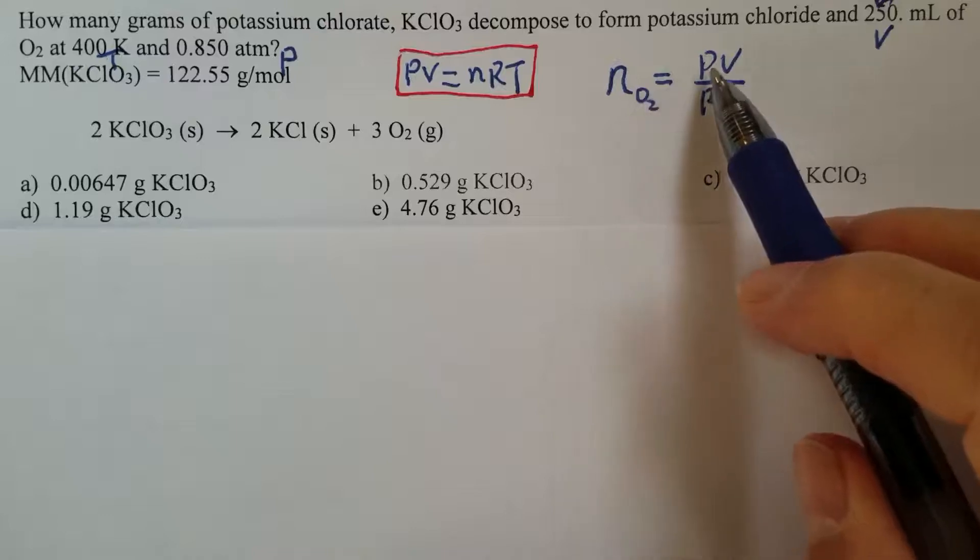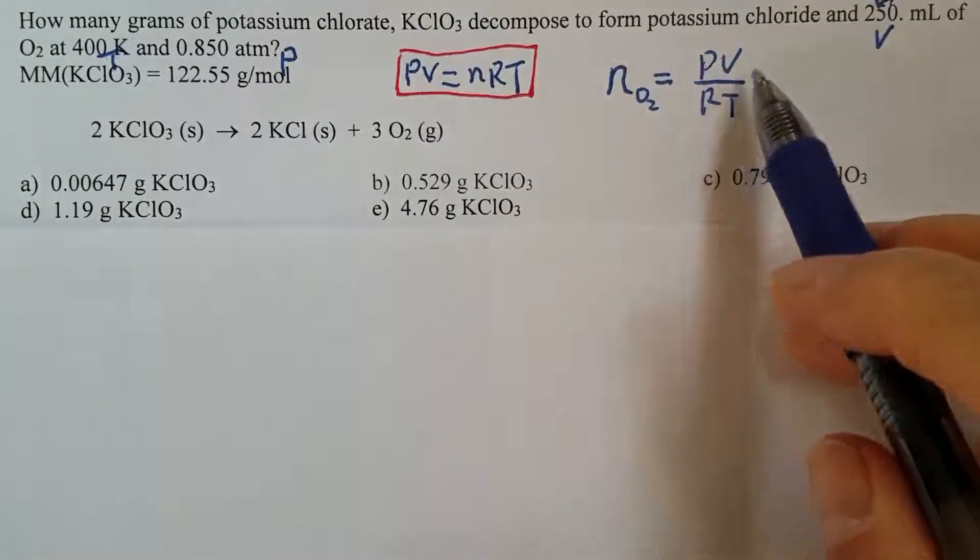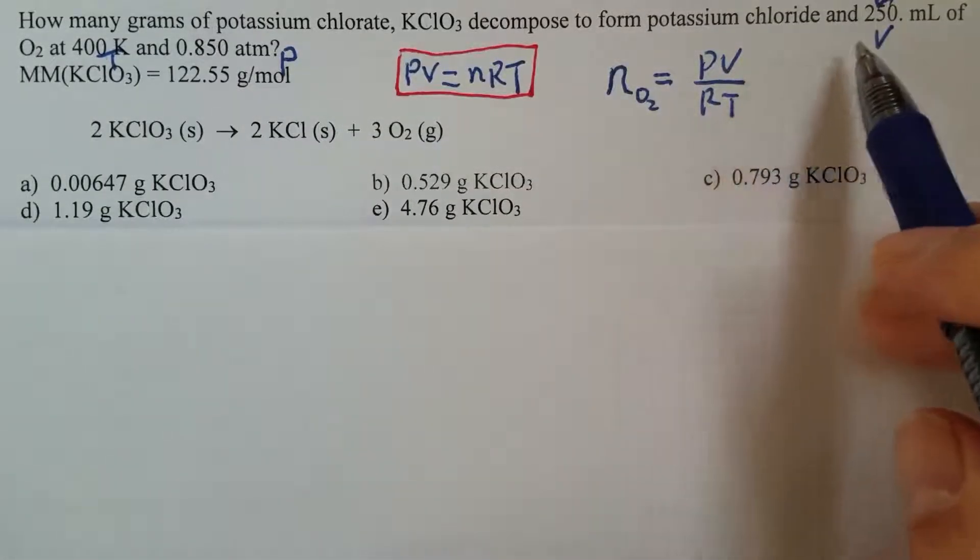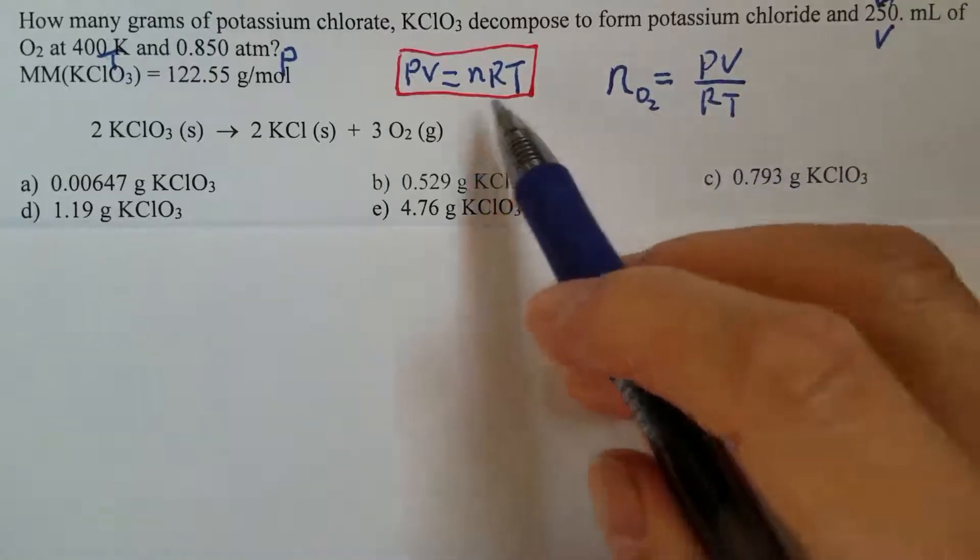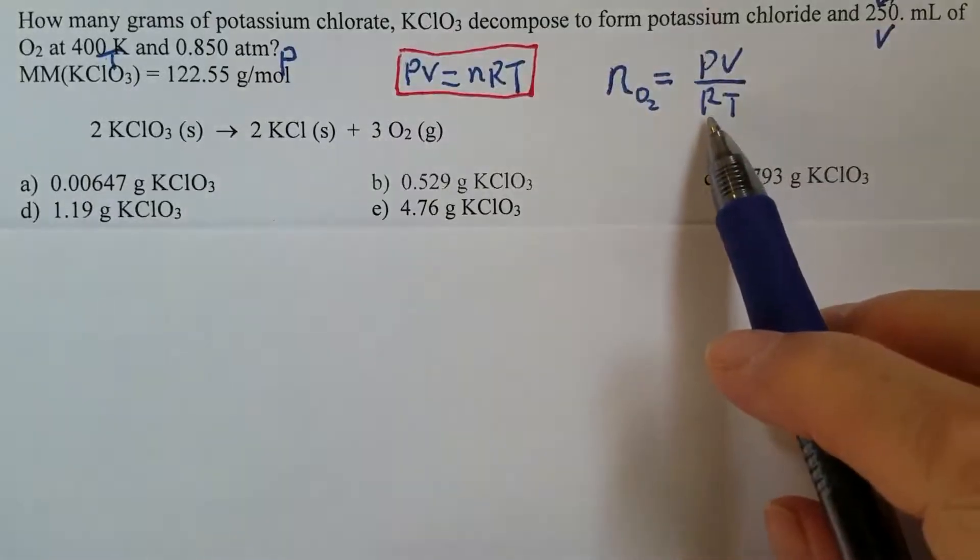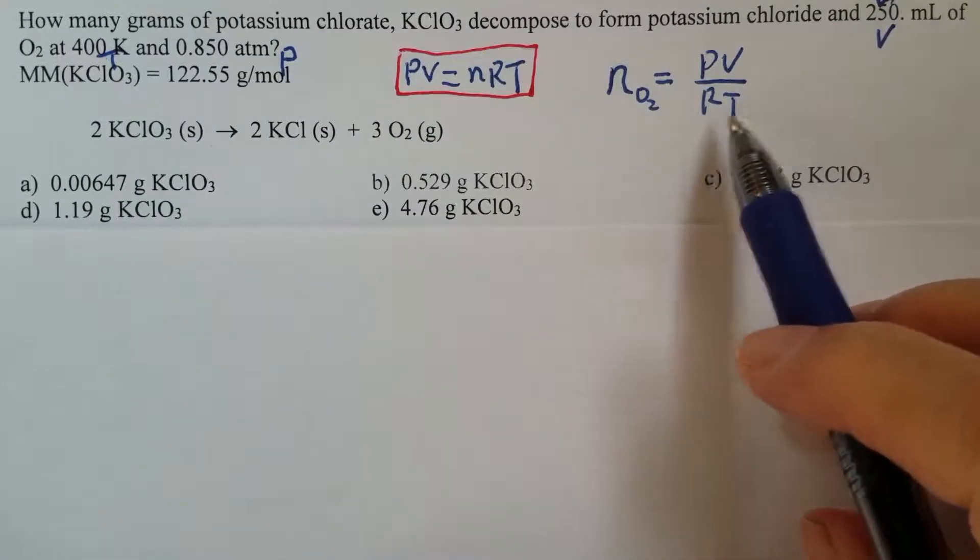We already have pressure and volume, only we need to convert the volume to liters, and then the temperature. R is a gas constant that should always be given.